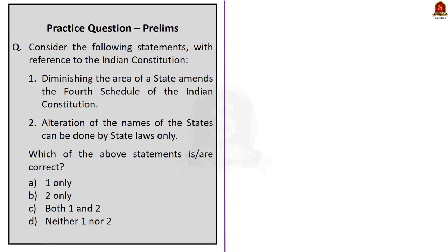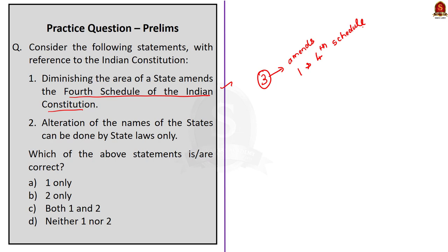The third question has two statements. Statement 1: Diminishing the area of the state amends the Fourth Schedule of the Indian Constitution. This is correct — diminishing the area of a state comes under Article 3, and any changes made through Articles 2 or 3 require amendment of both the First and Fourth Schedules. Statement 2: Alteration of the name of states can be done by the state clause only. This is incorrect — alteration of state names can be done only by parliamentary laws, as mentioned in Article 3. States can initiate the process but cannot do it by their own law alone. So Statement 1 is correct, Statement 2 is incorrect. The correct answer is option A — one only.